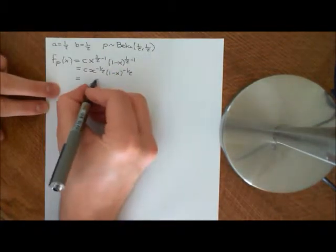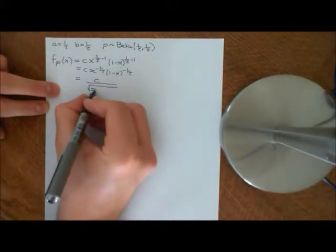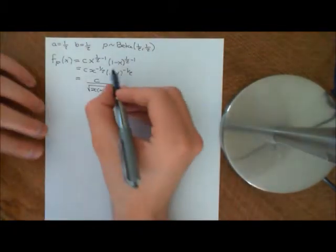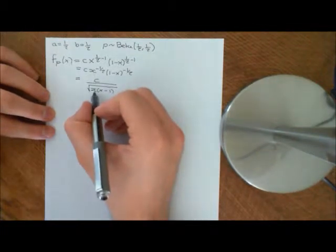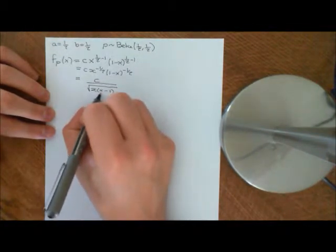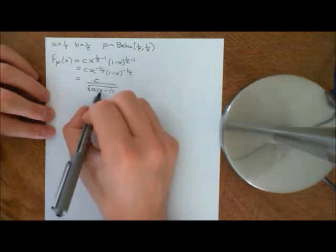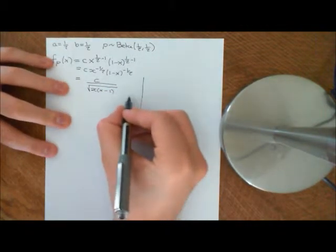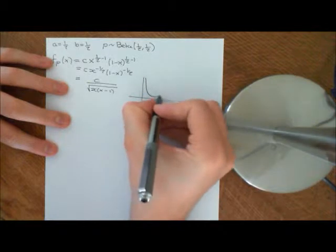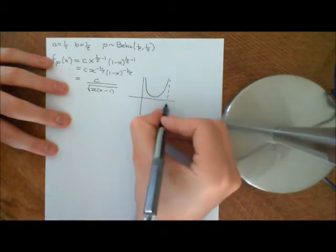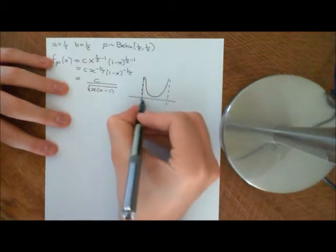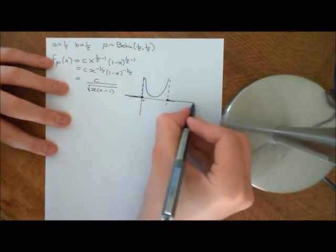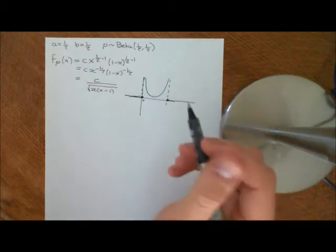You might like to write this as c over the square root of x times (1 minus x). Let's think about what this looks like. This is going to blow up as x approaches 0, and it's also going to blow up as x approaches 1, because the term (1 minus x) gets closer and closer to 0. So as a graph, this looks like a U-shape with an asymptote at 0 and an asymptote at 1. But remember, the probability density function is 0 by definition outside (0,1).